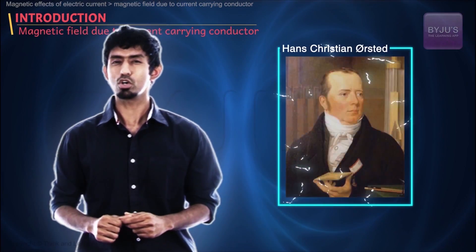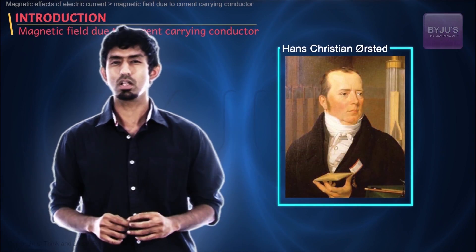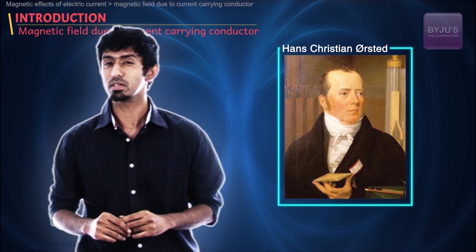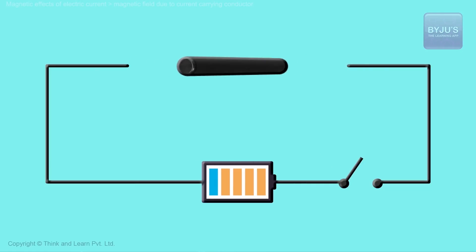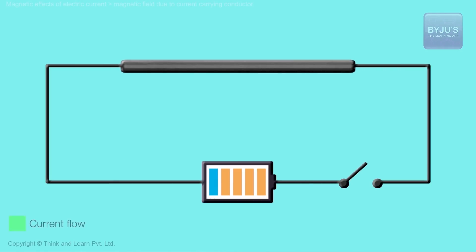Till one man called Oersted in a lecture noticed something extremely fascinating. He noticed that there was a current carrying conductor, a wire with some current going through it. Put it across a battery, there'll be some current. This we've done in the previous chapter.